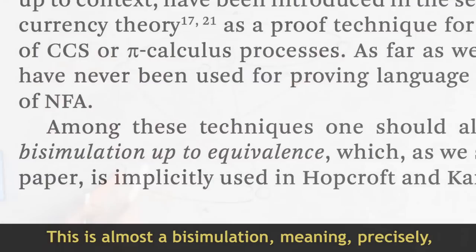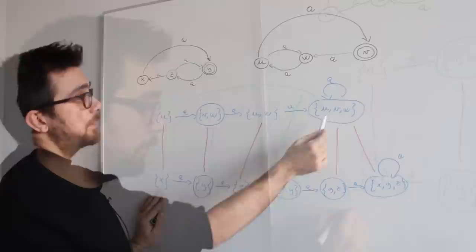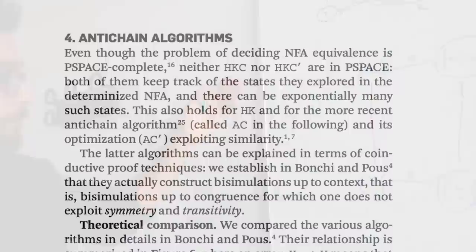By looking at how states previously related to each other, you can create a bisimulation up to context, saving even more steps. A later development called anti-chains had similar results.